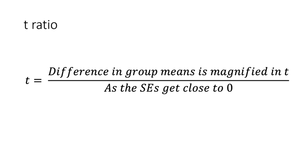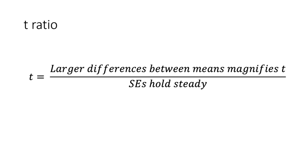In both conceptualizations, as the standard errors get closer to zero, then any difference in group means will be magnified in t. Also, as differences in means increase, then t is magnified if the standard errors hold steady.